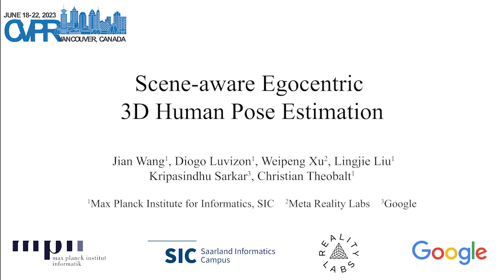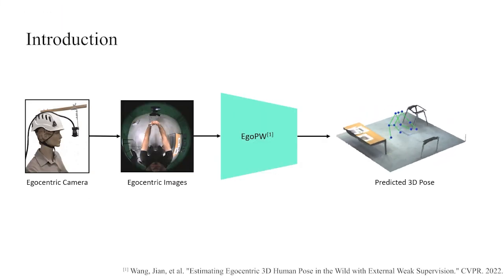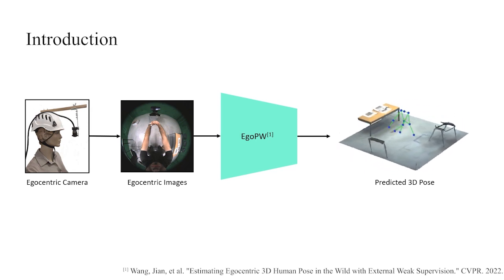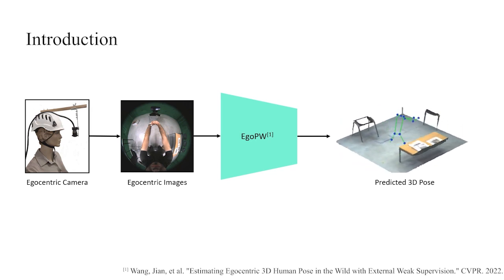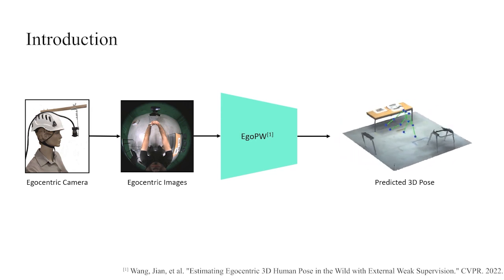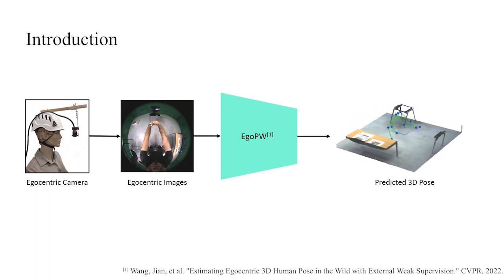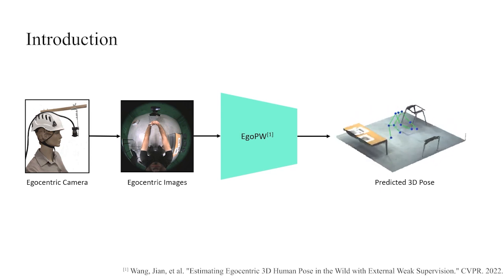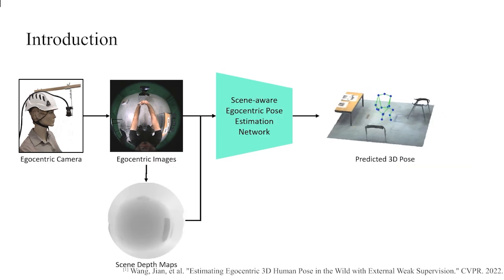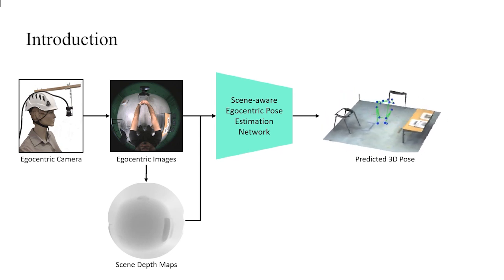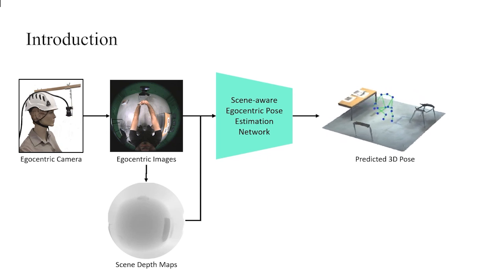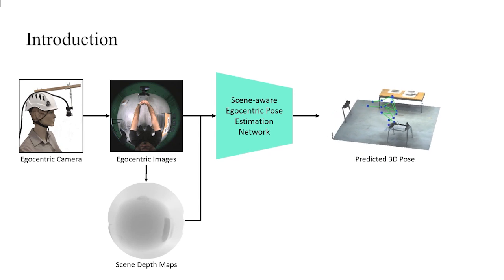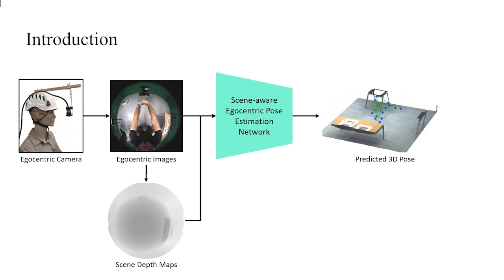We present scene-aware egocentric 3D human pose estimation, a new method that estimates accurate 3D body poses from a single egocentric image with scene constraints. Previous methods suffer from artifacts that violate physics plausibility, including body-environment penetrations or body floating in the air. To tackle this issue, we propose an egocentric depth estimation network to predict the scene depth map and a new scene-aware pose estimation network that regresses the 3D pose under the constraint of the scene depth map.